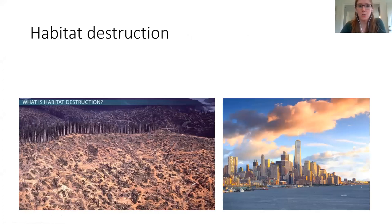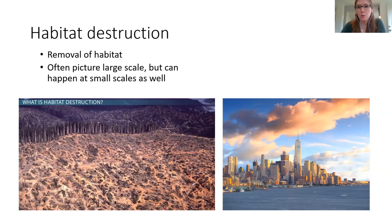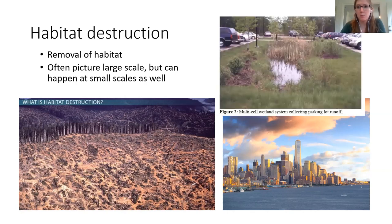So the first one, habitat destruction, is basically the removal of habitat. We often picture this at big scales — clear cutting of the Amazon rainforest or building a city in an area that used to be nature — but it can happen at super small scales as well. Maybe just putting in a parking lot covers up some important wetland, grassland, or forest habitat. So we can think about this at both small and large scales.